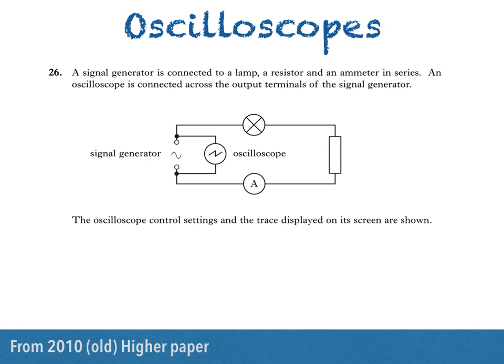Hi there. In this video I'll be answering a question about oscilloscopes, finding the peak voltage and frequency of an AC waveform before discussing RMS voltages. Here's a question from the 2010 Higher Physics paper. A signal generator is connected to a lamp, a resistor, and an ammeter in series. An oscilloscope is connected across the output terminals of the signal generator. The oscilloscope control settings and the trace displayed on its screen are shown.